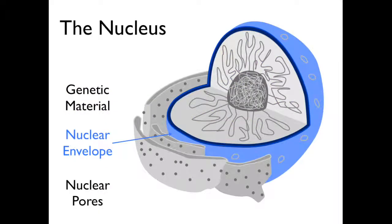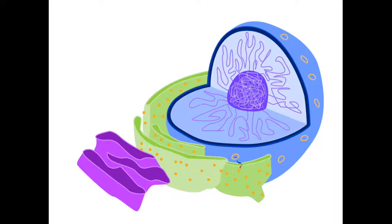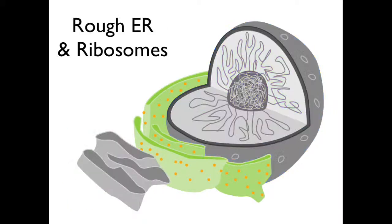The nuclear envelope surrounds the nucleus, and mRNA must pass through this envelope using nuclear pores. The mRNA exits the nuclear pore and heads for the rough endoplasmic reticulum.